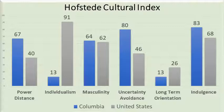Colombia's Power Distance Index is 67. This means that power is concentrated with individuals who are classified as leaders by their group. Group members accept authority with little question and expect there will be someone who holds a high level of power.